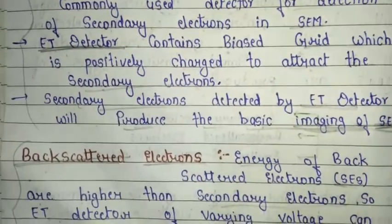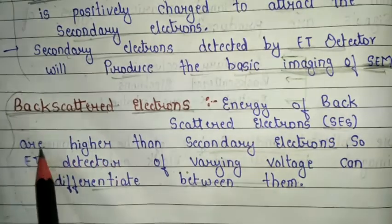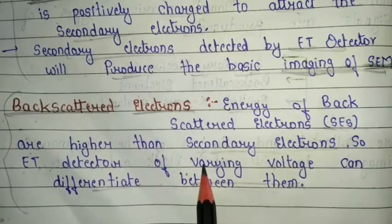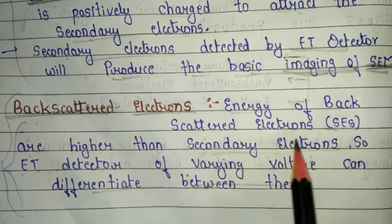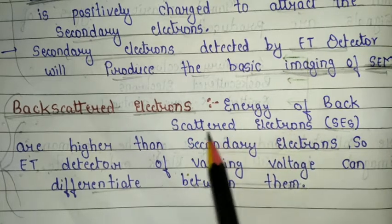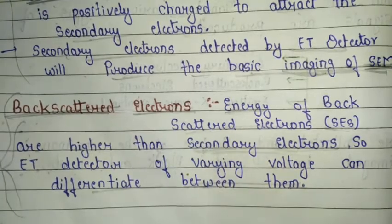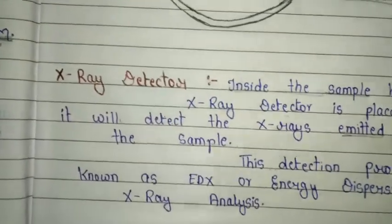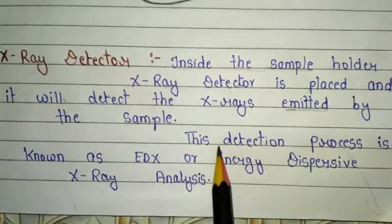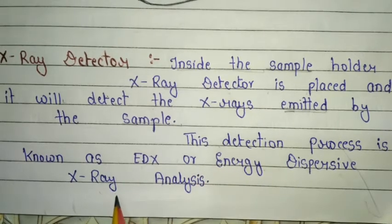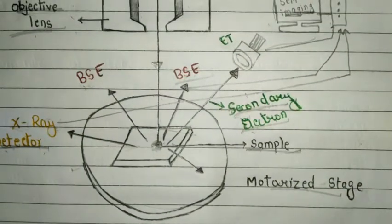The second detection in SEM is backscattered electrons, which is one of the very important signals. The energy of backscattered electrons is higher than that of secondary electrons. An ET detector of varying voltage can differentiate between them. The third detection in SEM is X-ray detection. Inside the sample holder, an X-ray detector is placed and it detects the X-rays emitted by the sample. This detection process is known as EDX — energy dispersive X-ray analysis.